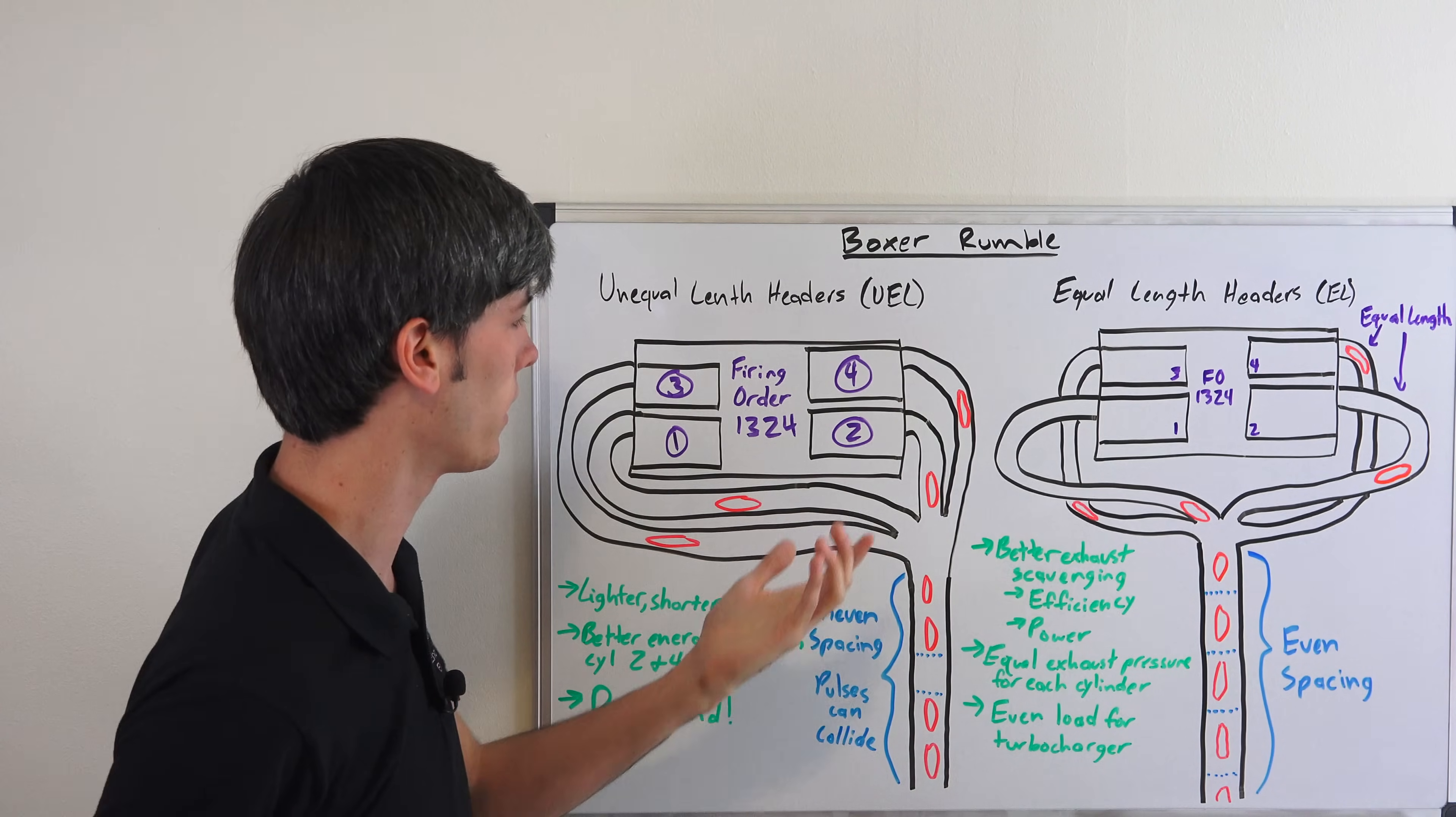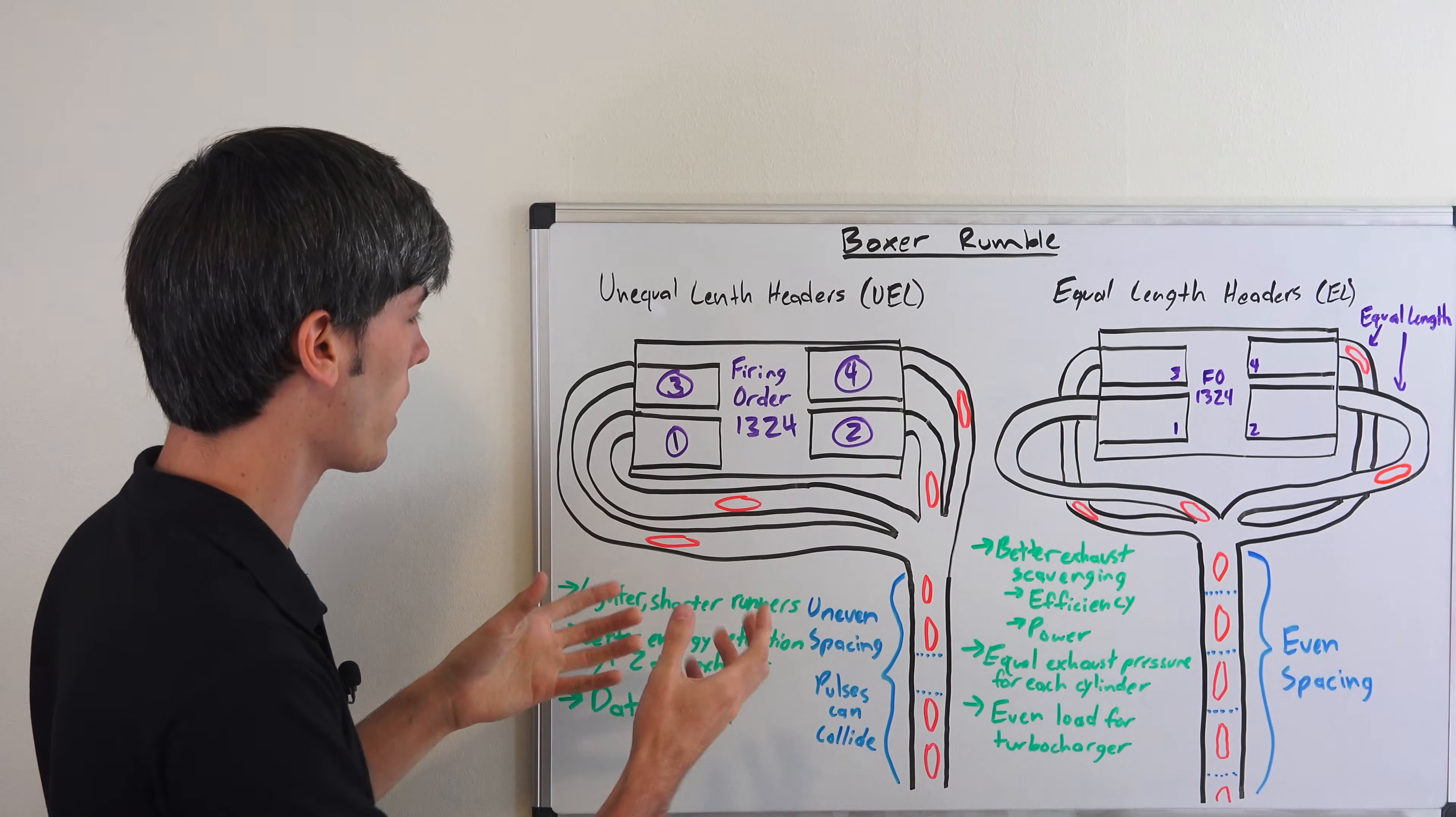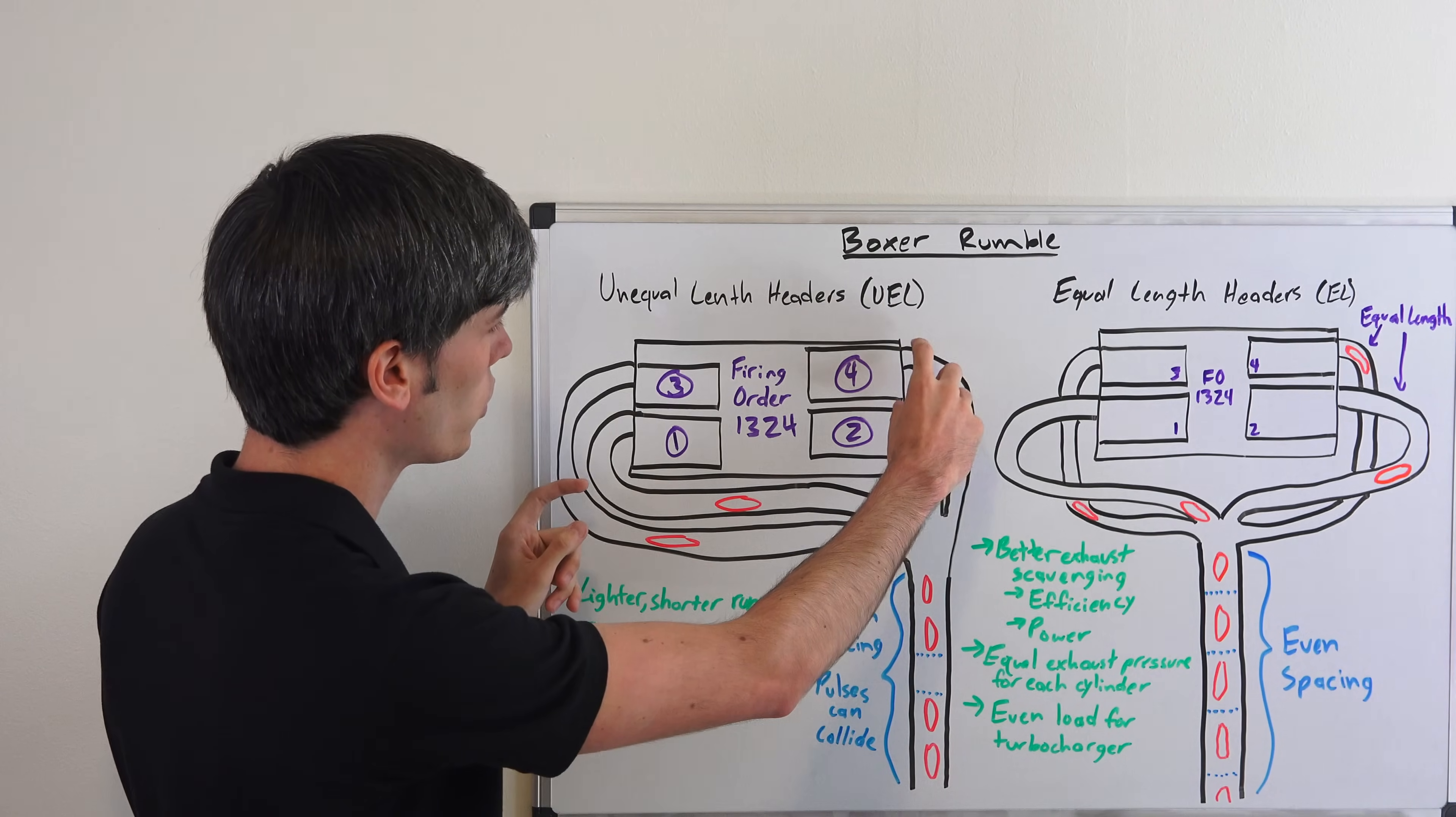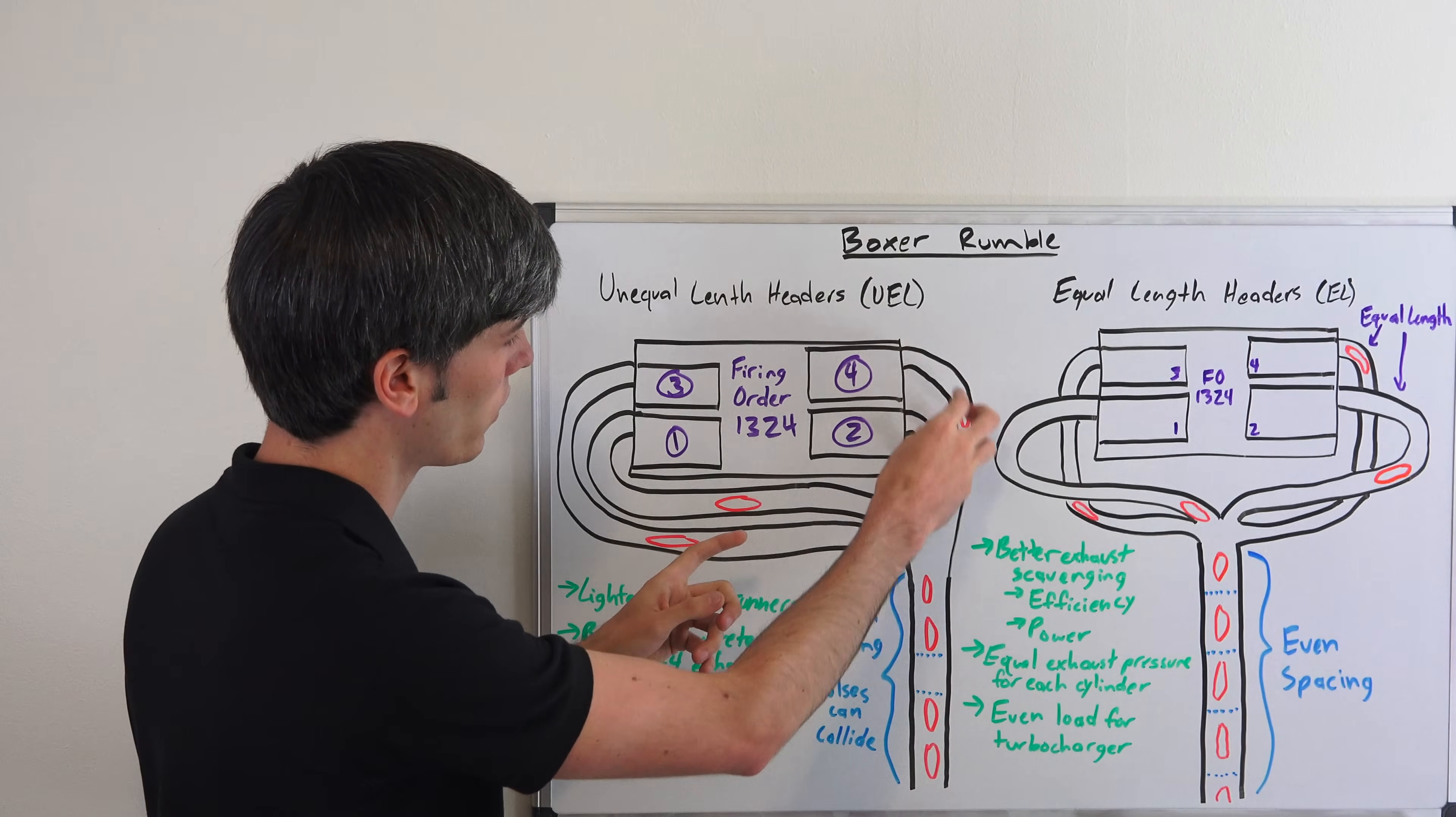The benefits of doing something like this: first of all it's lighter because you don't have to have as long of runners to make equal length headers. You can have lighter, shorter runner distances for cylinders two and four and that can save you some weight.